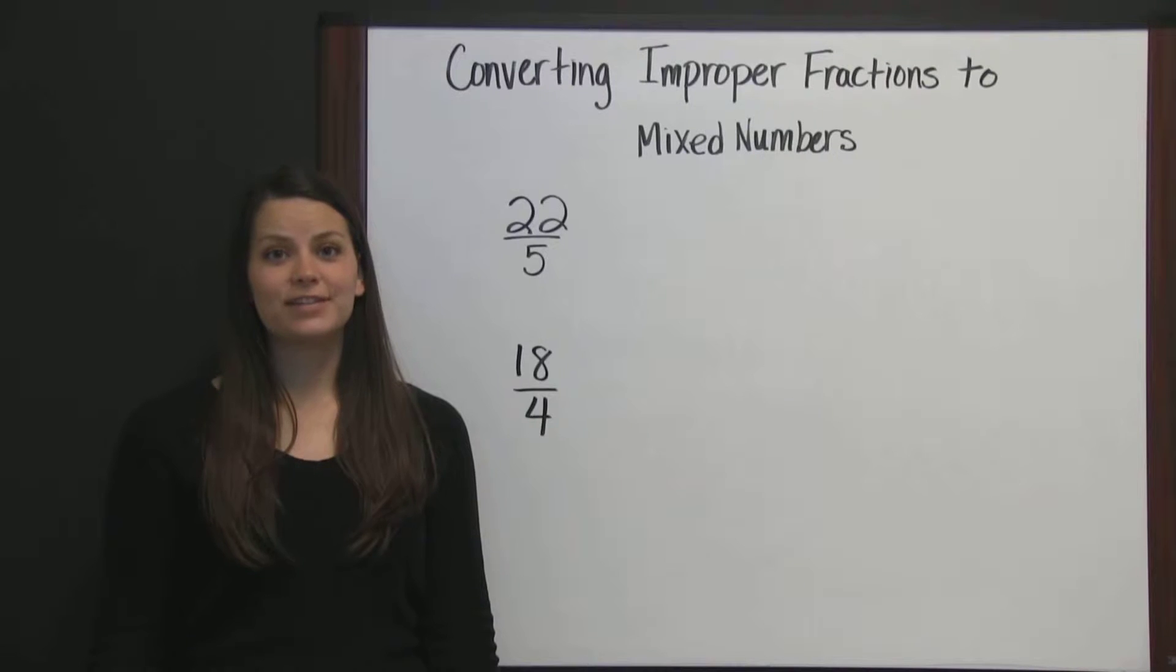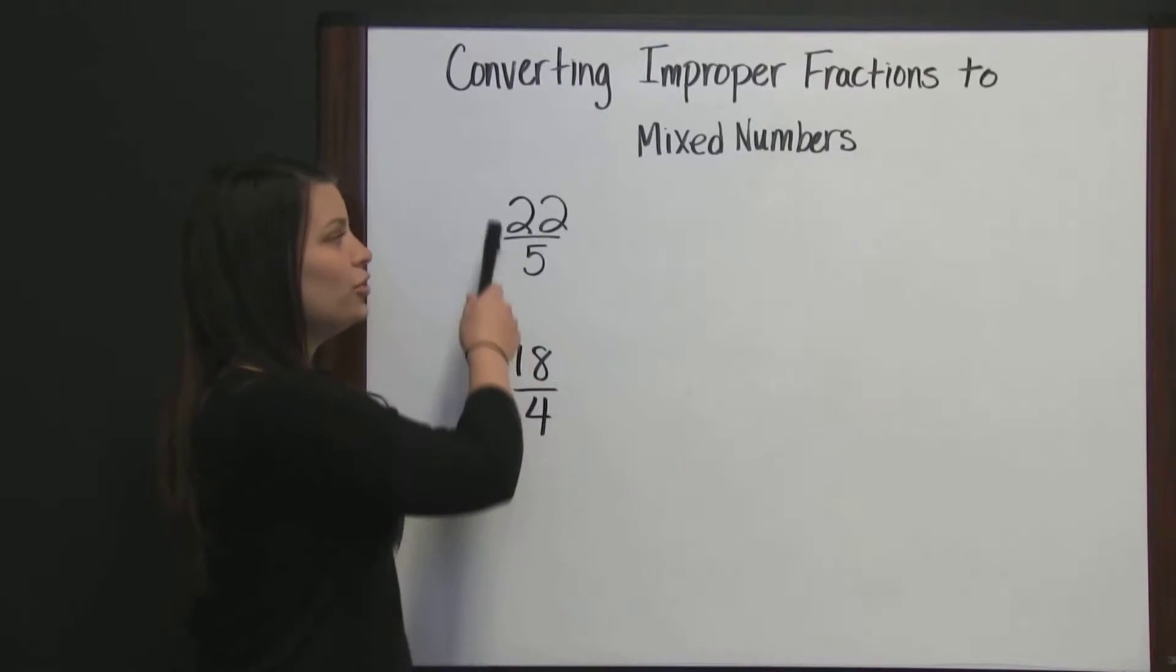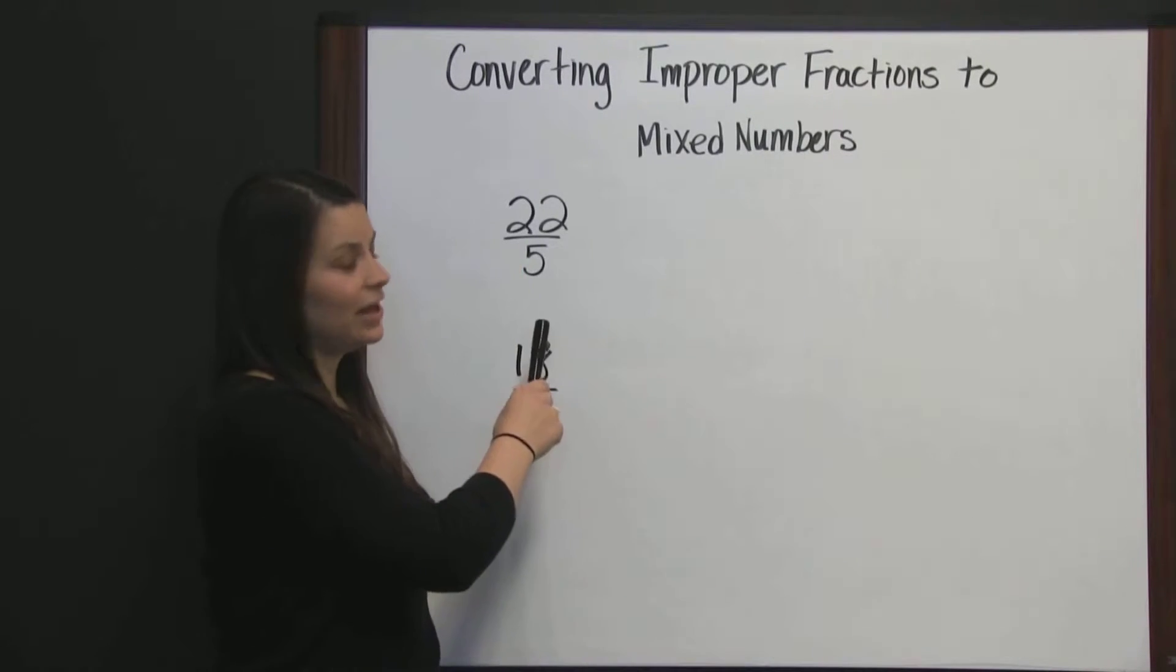Converting Improper Fractions to Mixed Numbers. To convert an improper fraction to a mixed number, first we're going to divide our numerator by our denominator.